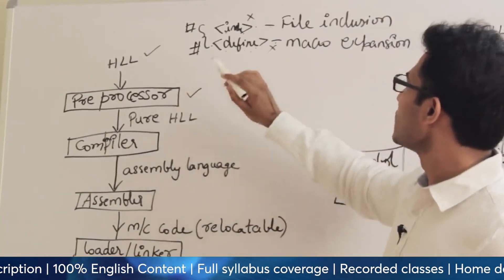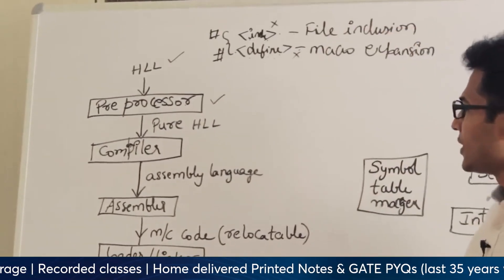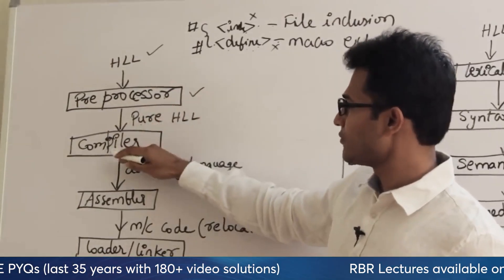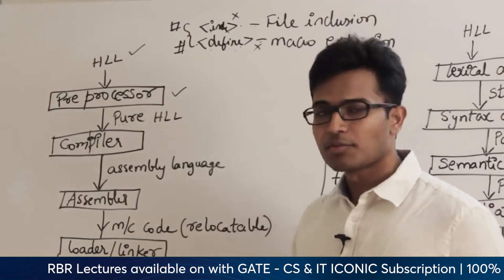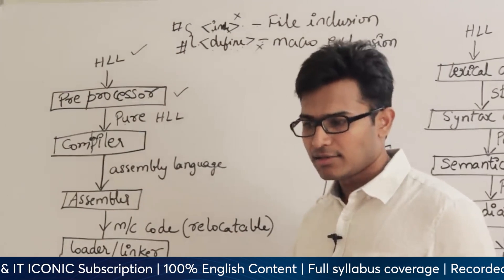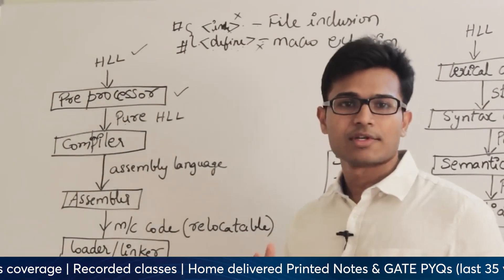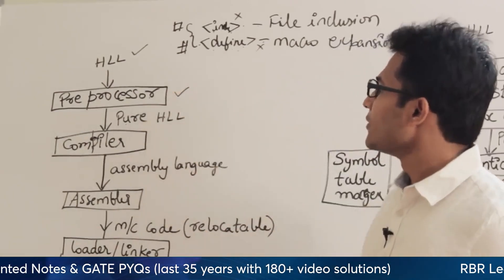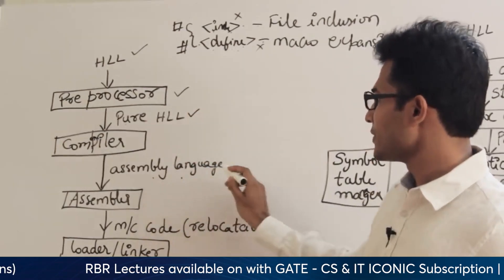So the preprocessor generally does these things: file inclusion and macro expansion. After the preprocessor phase, we enter the compiler phase. The input to the compiler is pure high-level language, which means the program will not contain any hash lines. These hashtags are also called preprocessor directives — they direct the preprocessor about what to do. The compiler will take the pure high-level language and convert it into assembly language.